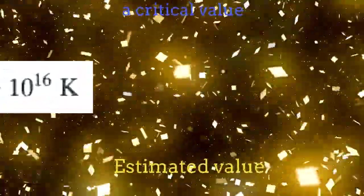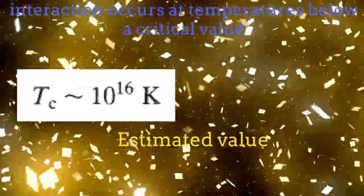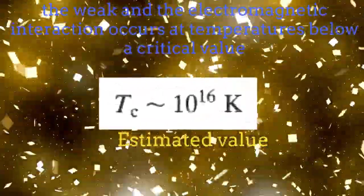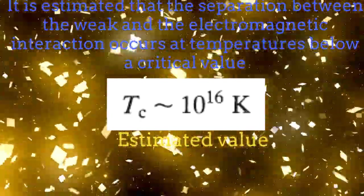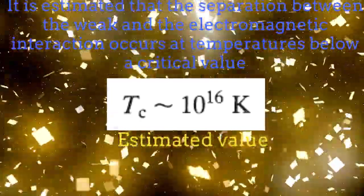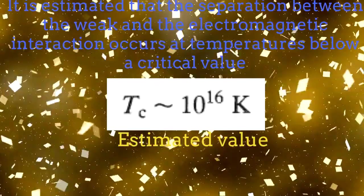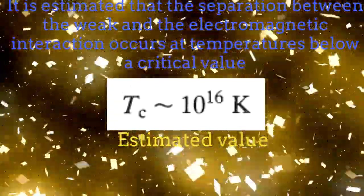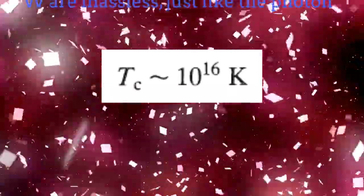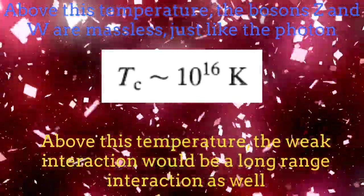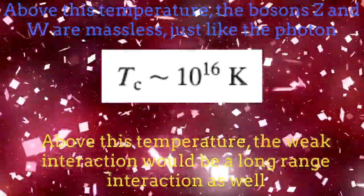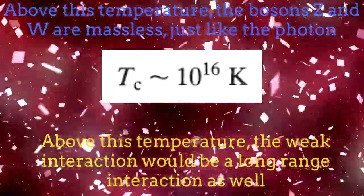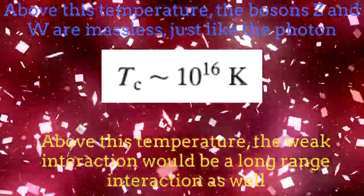Since the separation between the weak interaction and the electromagnetic interaction can be perceived as a phase transition, there is naturally a critical temperature above which both interactions are unified. The temperature is approximately 10 to the 16 Kelvin. Over this temperature, the bosons Z and W are massless and the weak interaction becomes an infinite range interaction just like the electromagnetism.